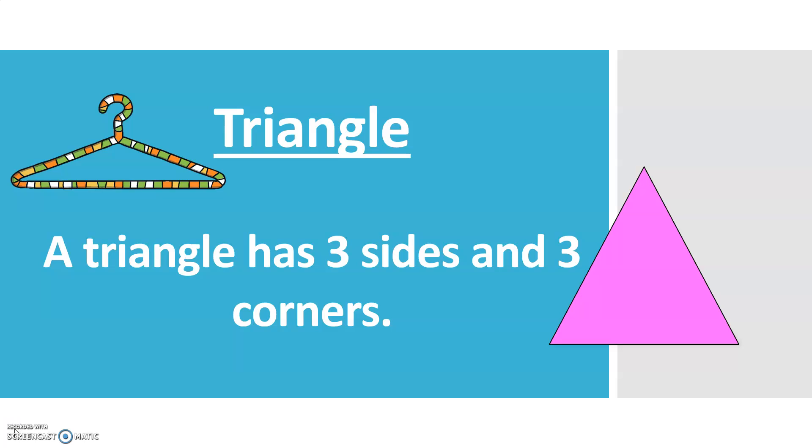A triangle. A triangle has three sides and three corners. An example of a triangle is a coat hanger.